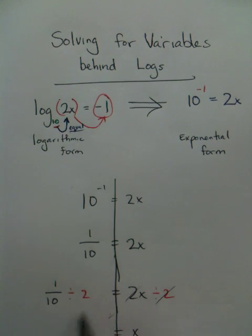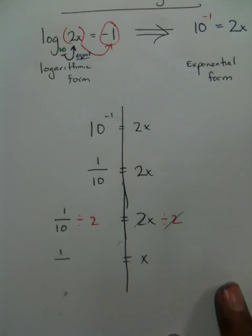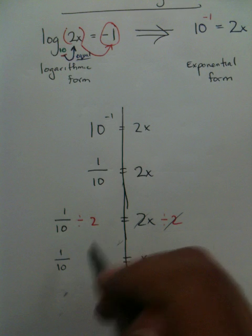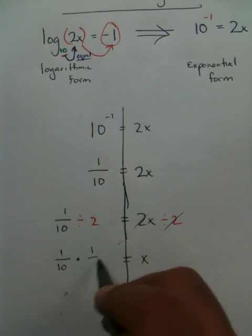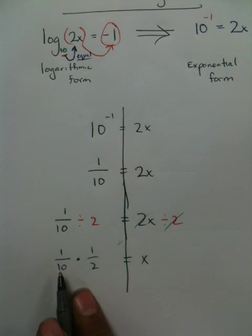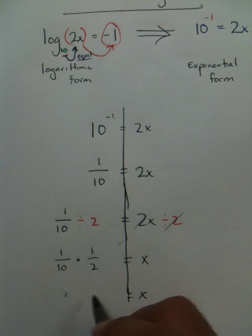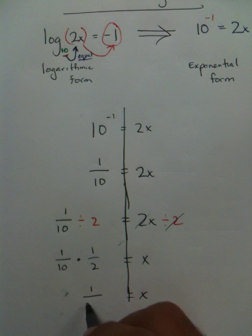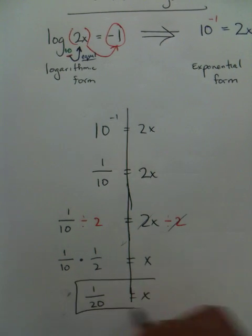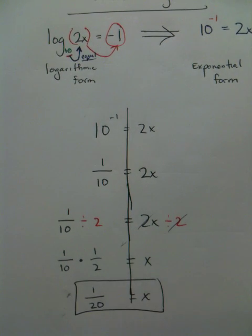Now, what you're left with is fraction arithmetic. You can multiply those together, because those are basic division rules. And, x equals 1 twentieth. And that's how you would solve for x when it's behind a logarithm.